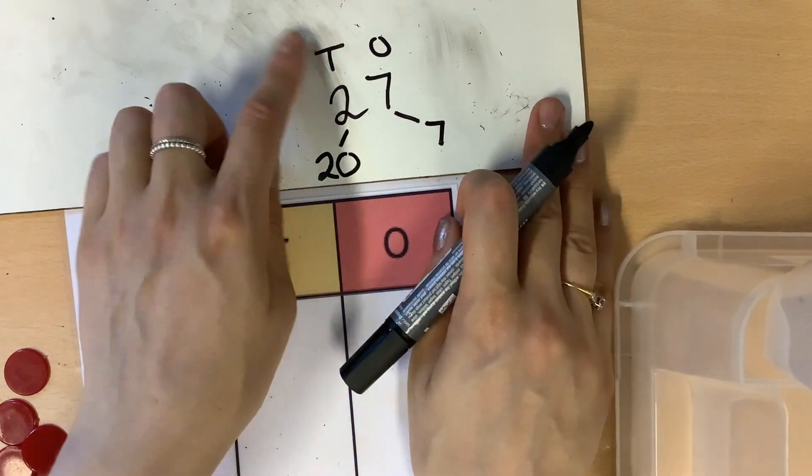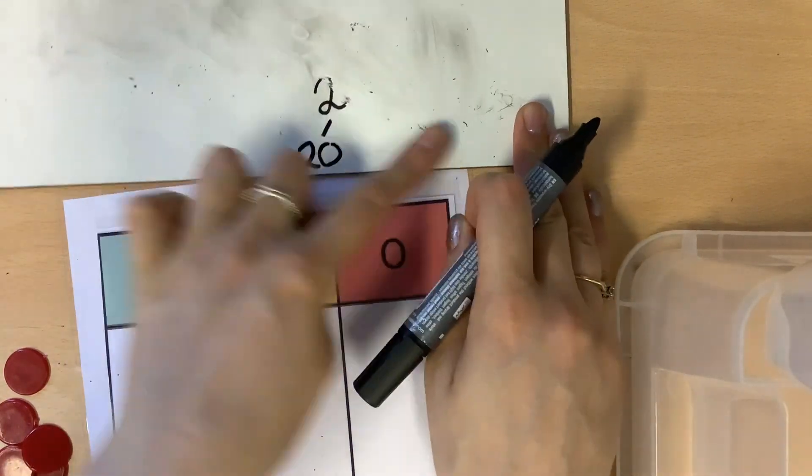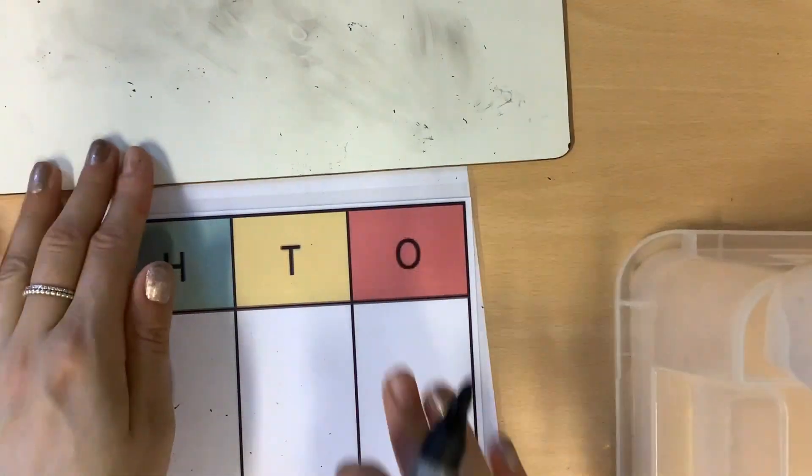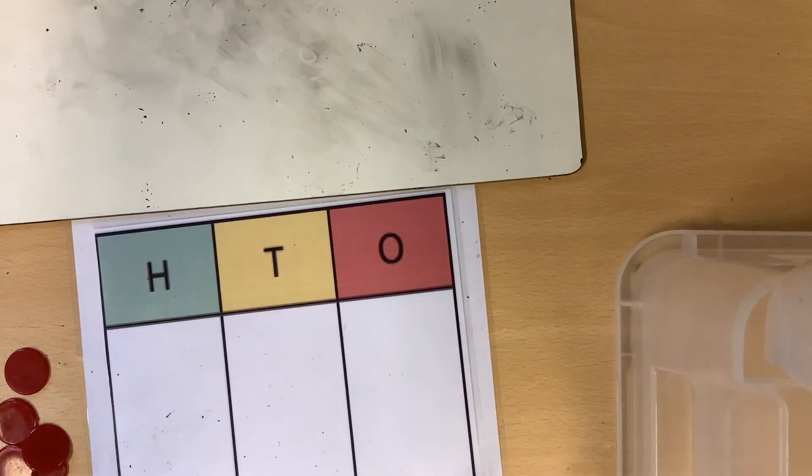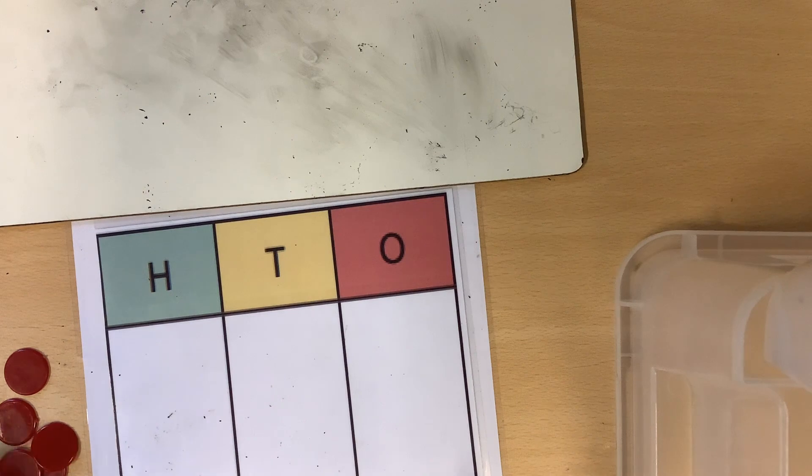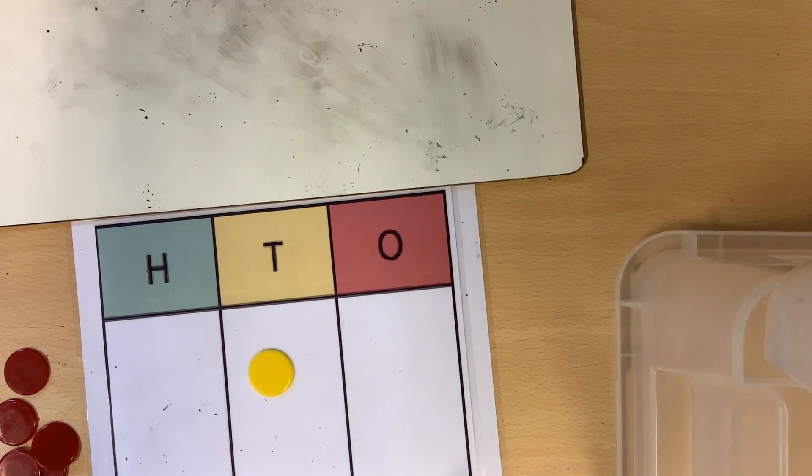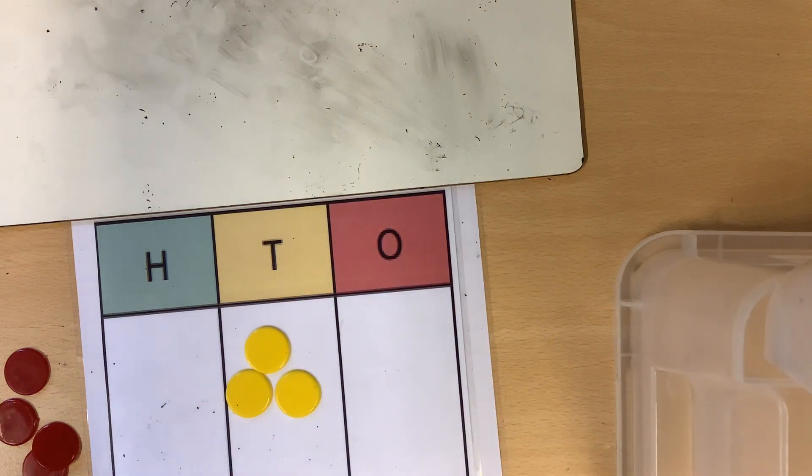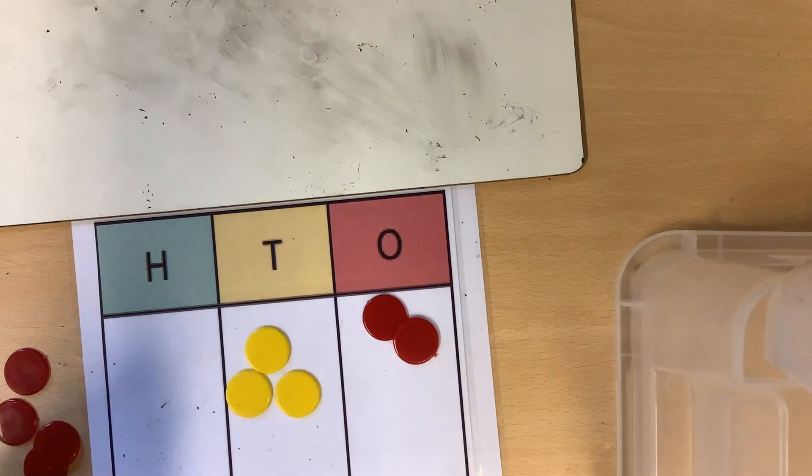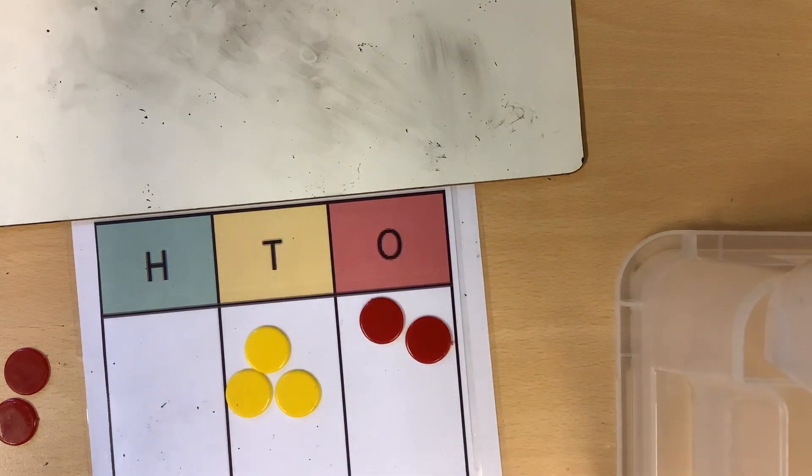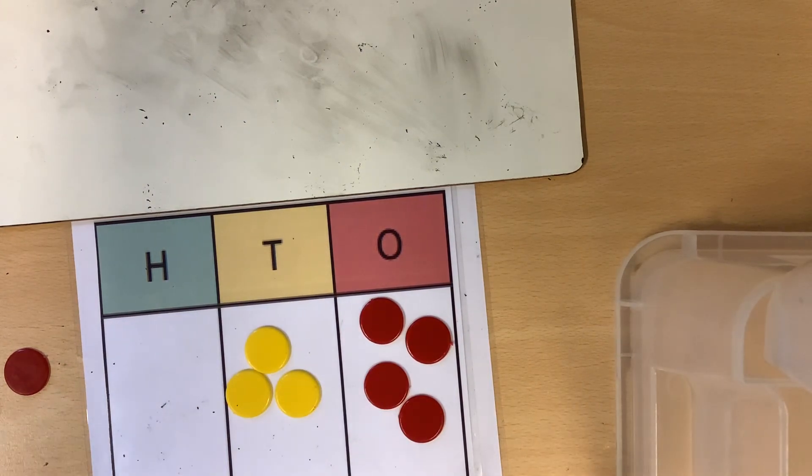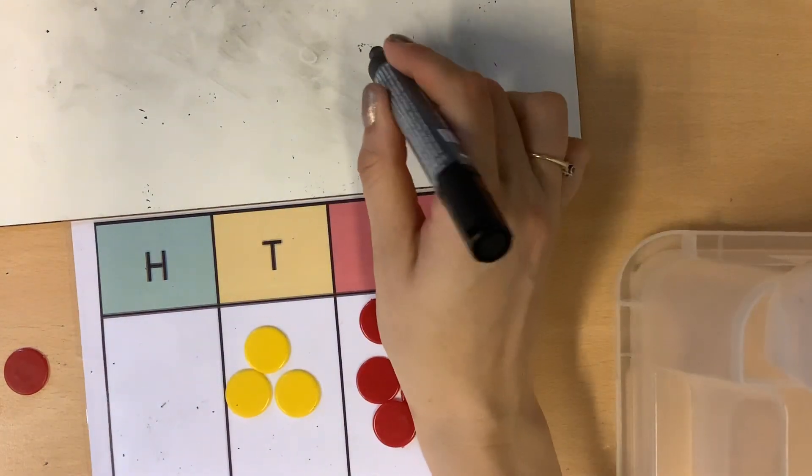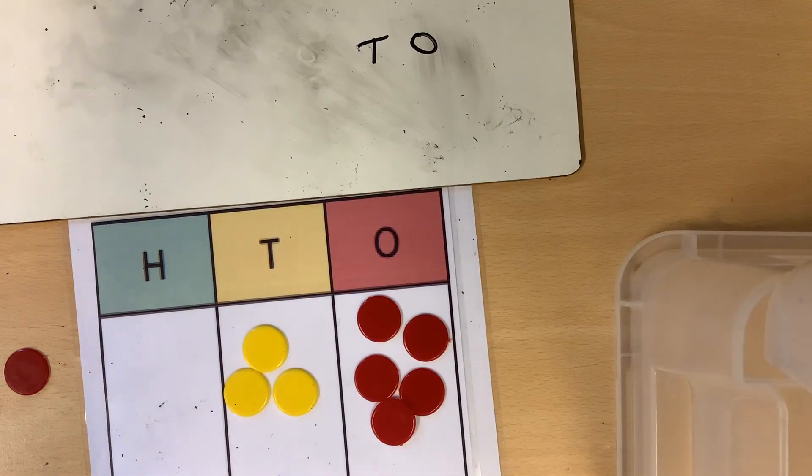Instead of writing the number first, I'm going to make the number and then decide the number that I've made. I might put 3 there and 5 here. I'm going to put up my tens and ones to help me.